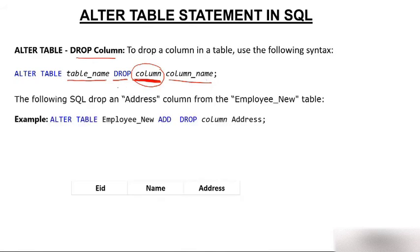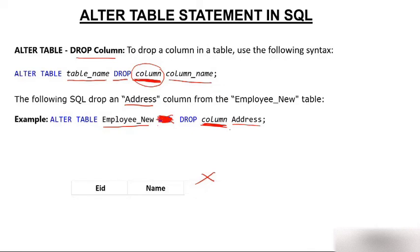For example, to drop the address column: ALTER TABLE employee_new DROP COLUMN address. You do not need to specify the data type when dropping. The moment you execute this, the address column gets removed from the table.